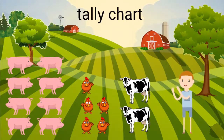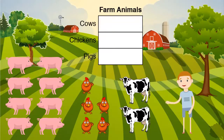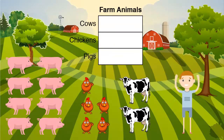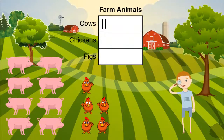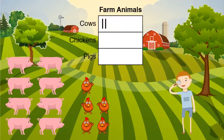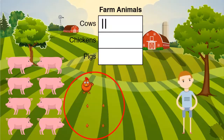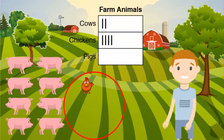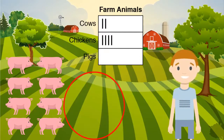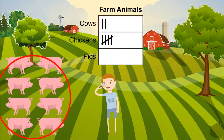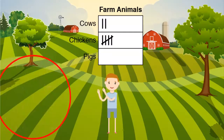We can also make a tally chart to show our data. This tally chart also has a title and categories, just like the picture graph. However, a tally chart uses line marks for each piece of data. We have two cows, shown with two marks. We have five chickens — we make four marks first, then show the fifth mark with a diagonal line. We have eight pigs, shown on the tally chart as a group of five with three lines left over.